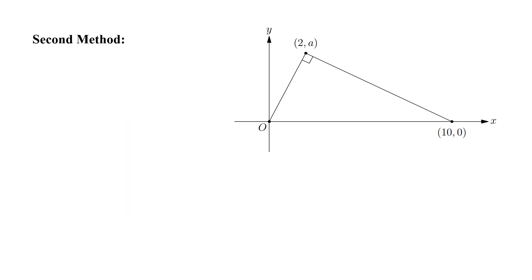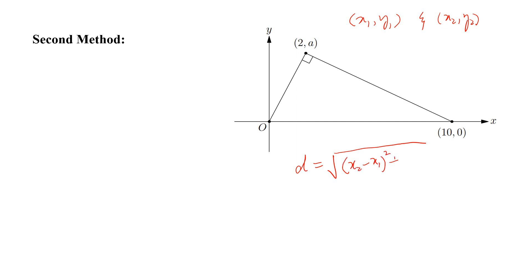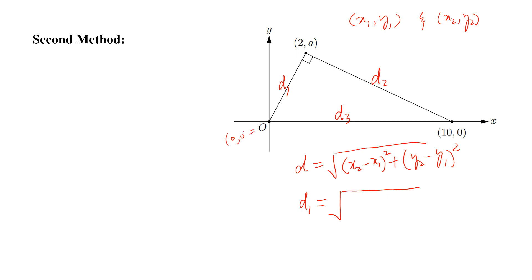Now we solve the same question using the distance formula. If we have two points X1, Y1 and X2, Y2, we can find the distance as the square root of (X2 minus X1) squared plus (Y2 minus Y1) squared. If this distance is d1, this is d2, and this is d3, we can calculate d1 equals the square root of 2 minus 0 whole square plus A squared, which equals the square root of 4 plus A squared.